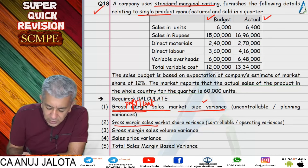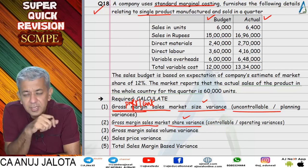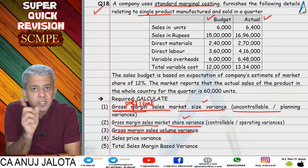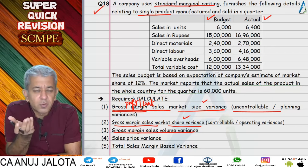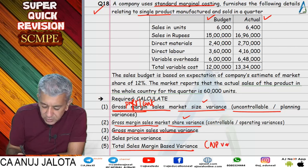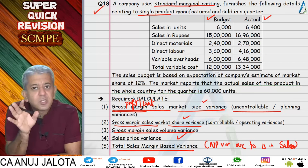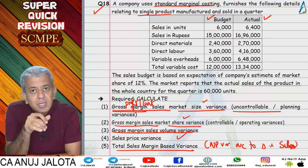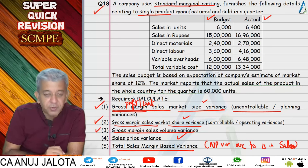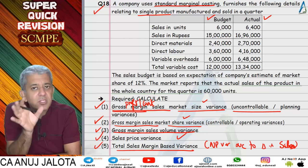Market size variance is also called uncontrollable variance or planning variance. Market share variance is a controllable variance. Then you have gross margin sales volume variance, which means profit volume variance — and in marginal costing this means contribution volume variance. Finally, total sales margin based variance means net profit variance due to change in sales, plus selling price variance. All these come under profit variances.